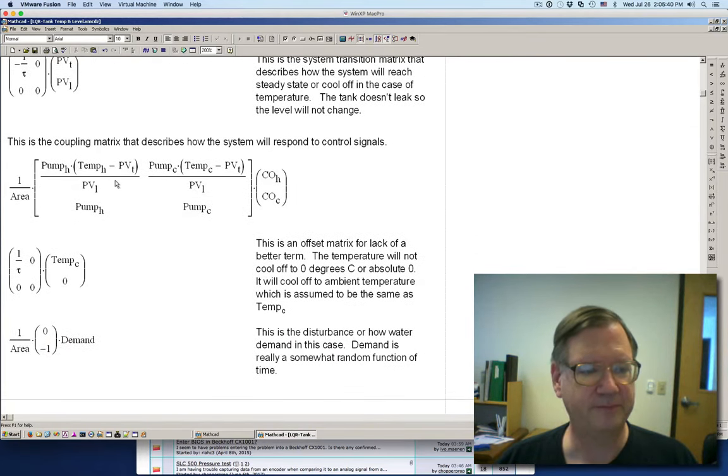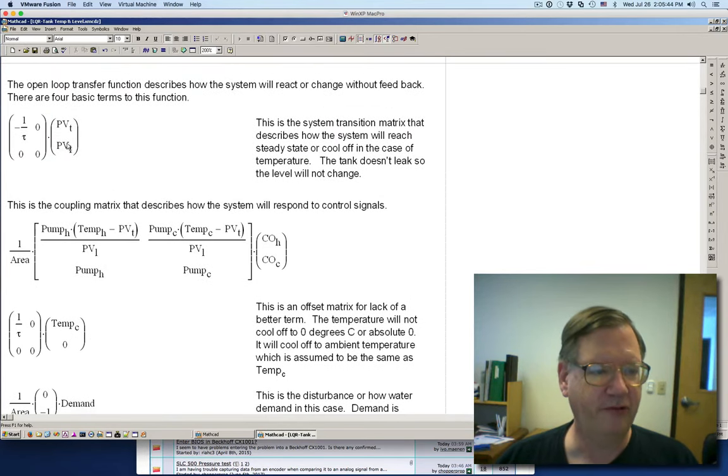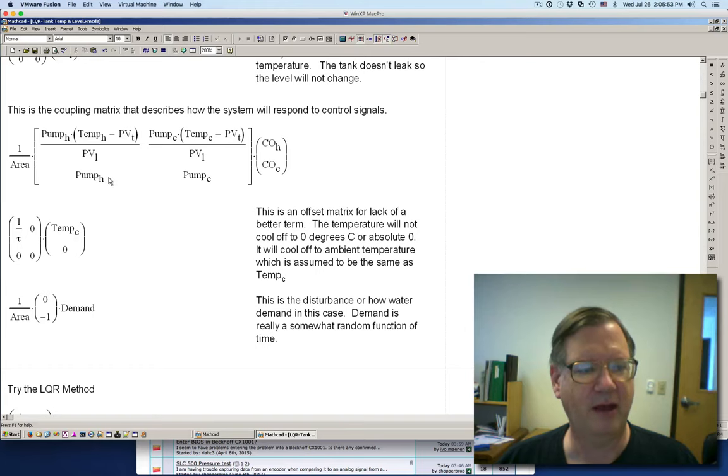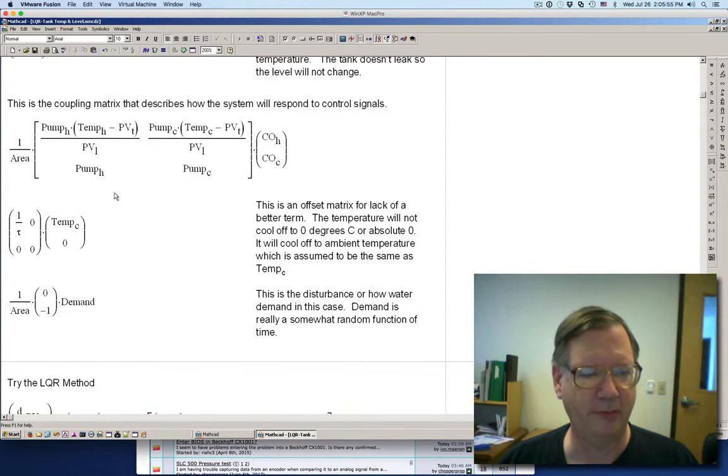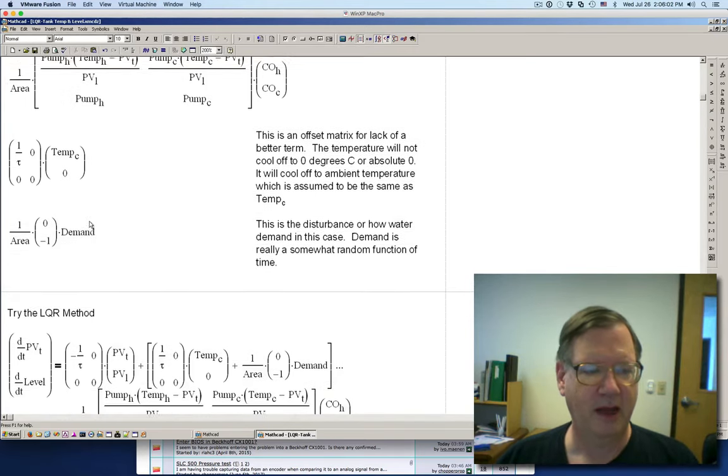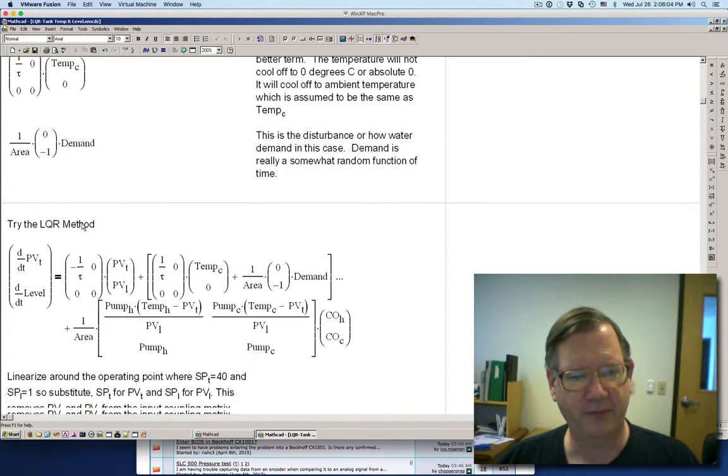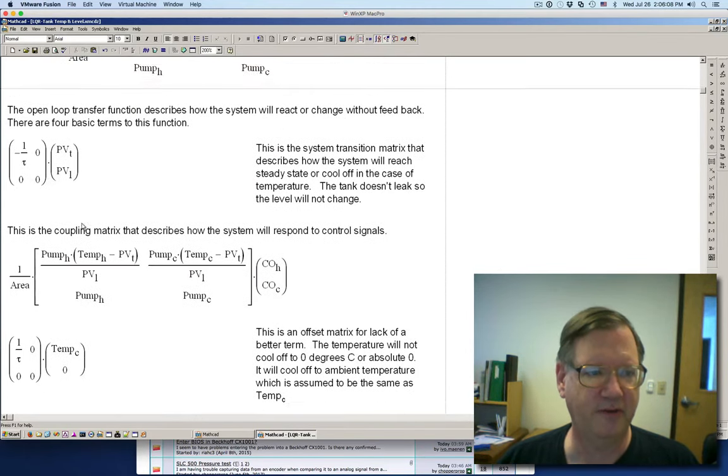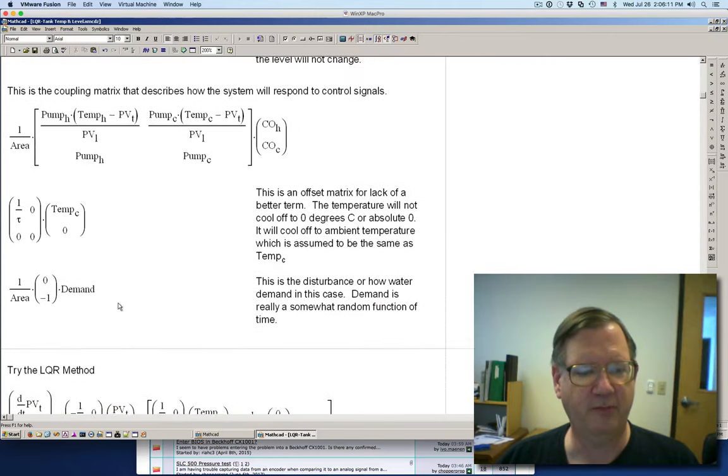Now, the problem is we've got to make this linear. So this is the nonlinear system. And again, this is how the temperature is going to decay as a function of time. And then this is how the mixing is going to happen from the two pumps. And then this makes sure that the temperature doesn't decay to less than ambient. And then this is the demand formula. So I'm just breaking this equation down into four different parts.